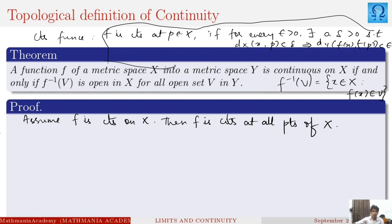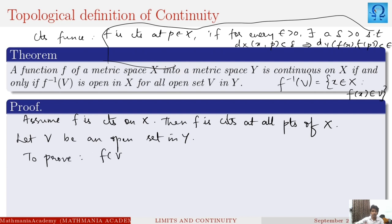Let us assume V is some open set in Y. Then we will have to prove that f inverse of V is open in X. Since V is assumed to be an open set in Y, all the points of V are considered.